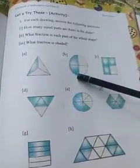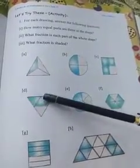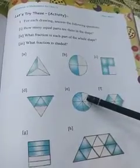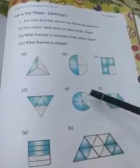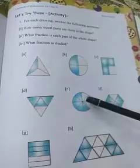Shape b: each part is one by four (1/4). Shape c: each part is equal to one by four (1/4). Shape d: each part is one by four (1/4). Each part is equal to one by three (1/3) for another shape.